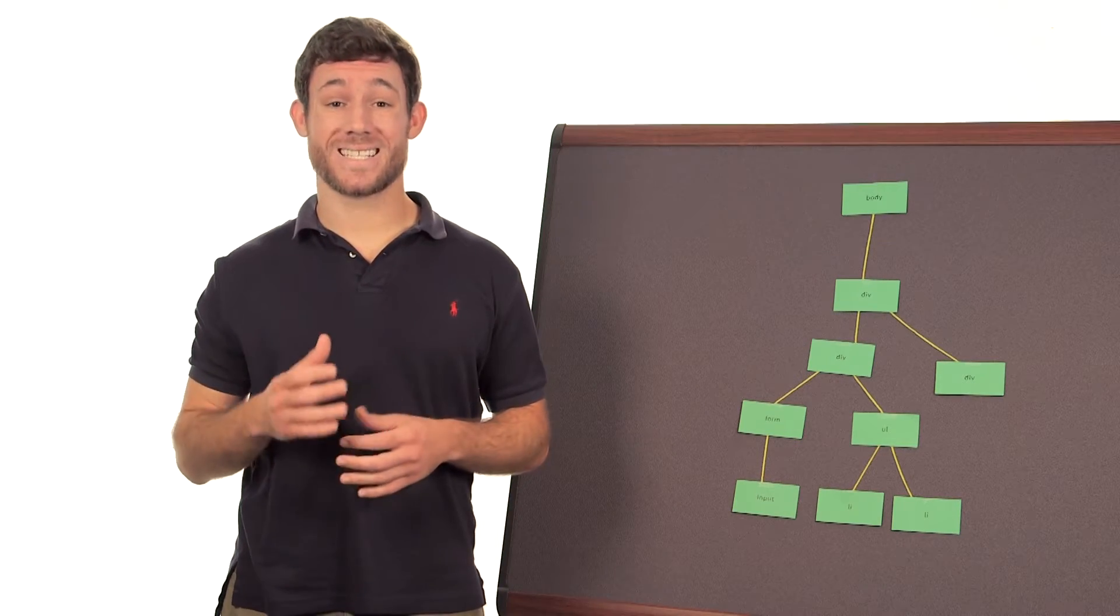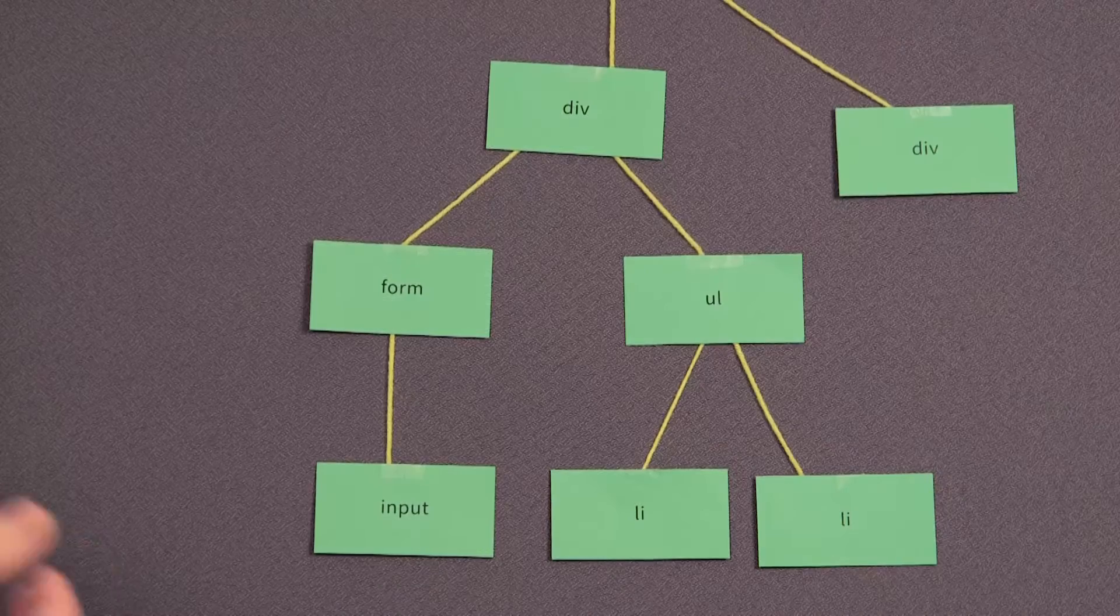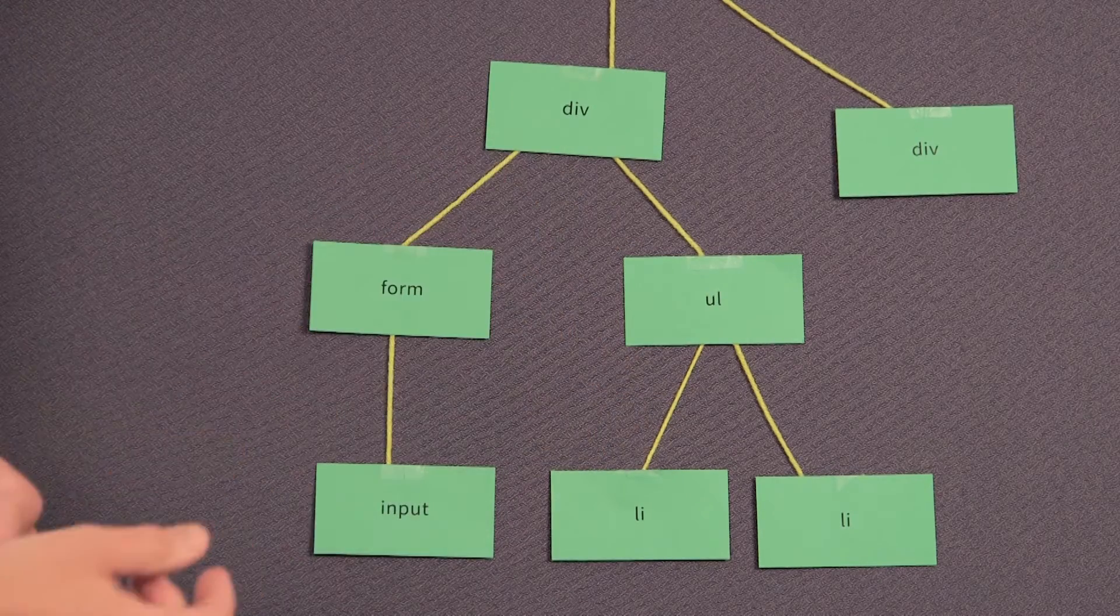Elements that are nested inside each other in the DOM are children. Like, for instance, this unordered list, which is a child of div.